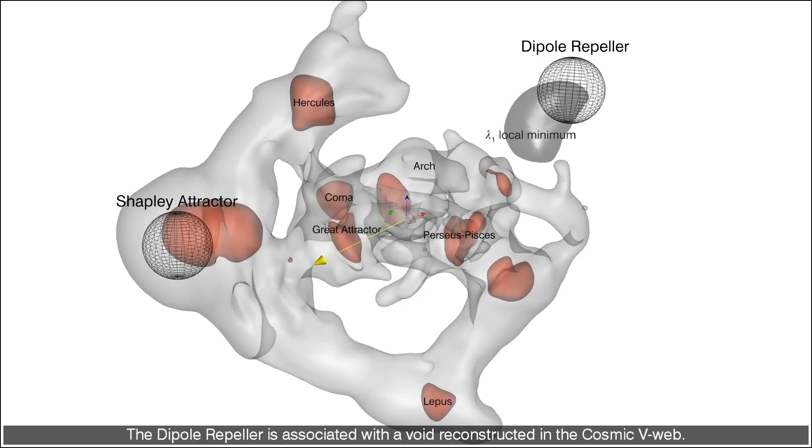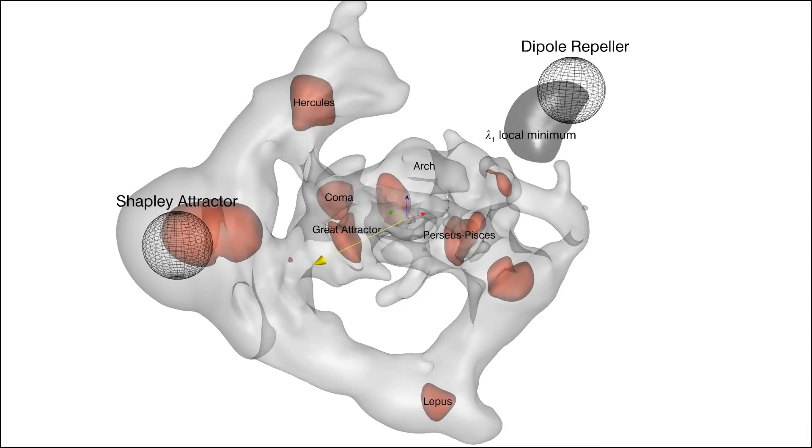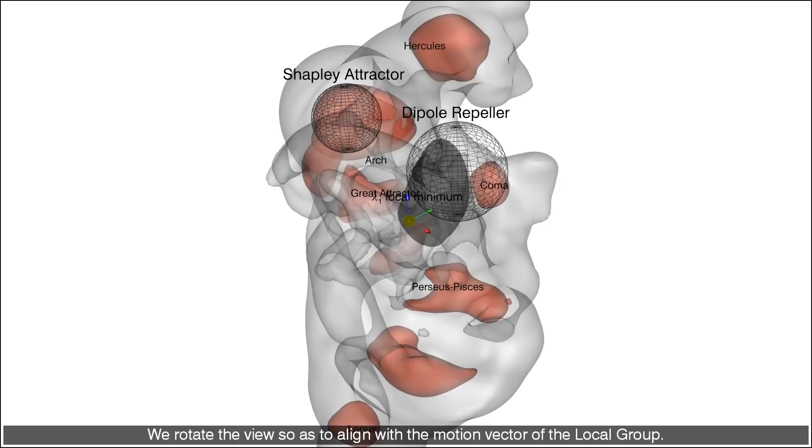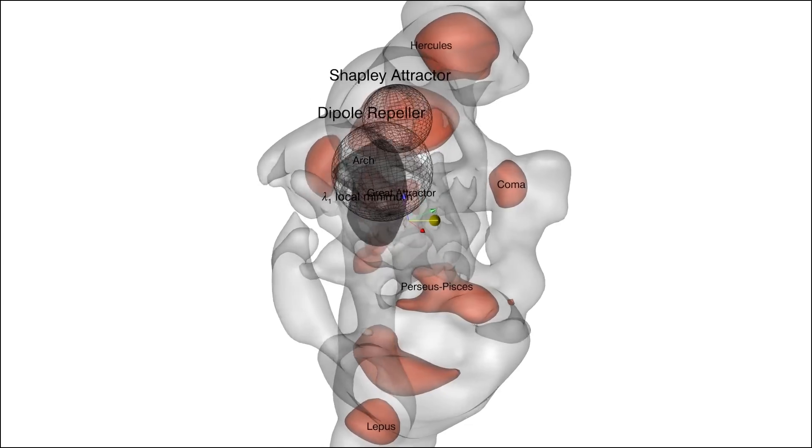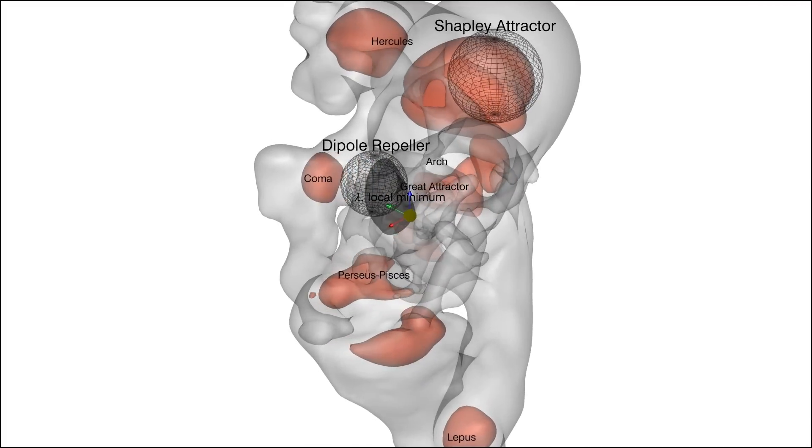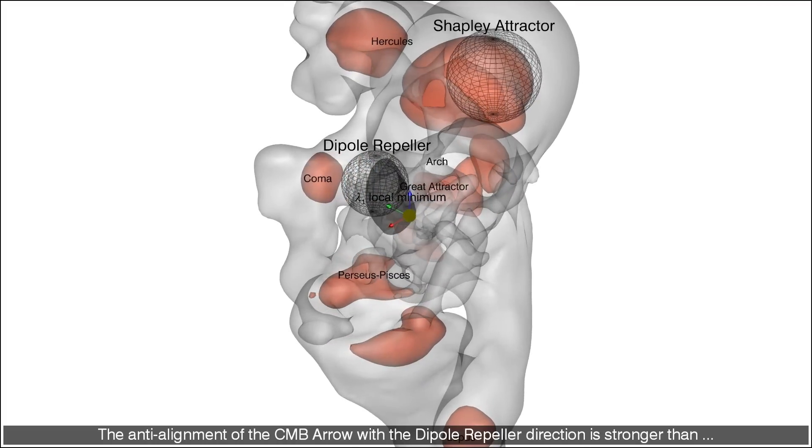The dipole repeller is associated with a void reconstructed in the cosmic web. We rotate the view so as to align with the motion vector of the local group. This motion is aligned with the region of the dipole repeller. We now proceed to the view anti-aligned with the CMB arrow. The anti-alignment of the CMB arrow with the dipole repeller direction is stronger than its alignment with the Shapley attractor.